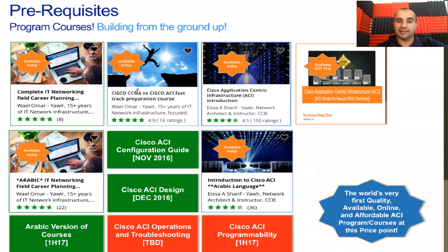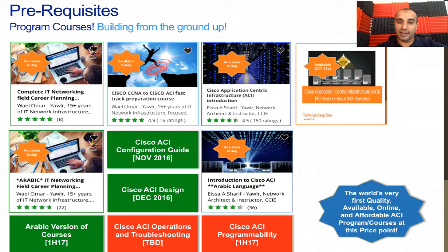All of that is not included in CCNA or CCNP routing and switching. So if you have CCNA or CCNP, your first step into the ACI Mastery Program — if you're not interested in career planning — will be the Cisco CCNA to Cisco ACI Fast Track Preparation Course, which is this course. It introduces you at a high level to SDN, NFV, cloud models, cloud deployments, and VXLAN, which is the core of SDN. It's about four hours and 23 lectures and will ramp you up quickly.